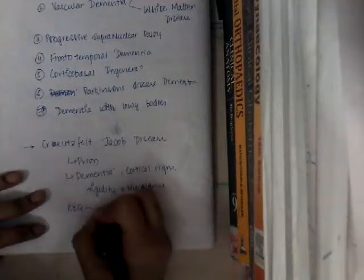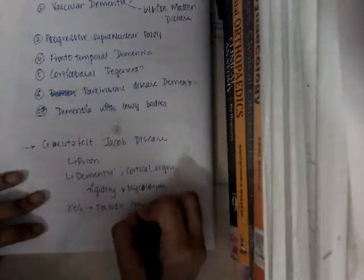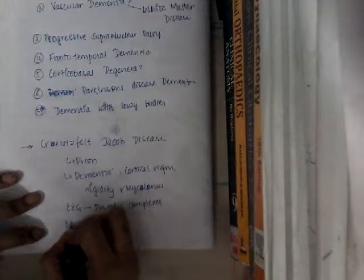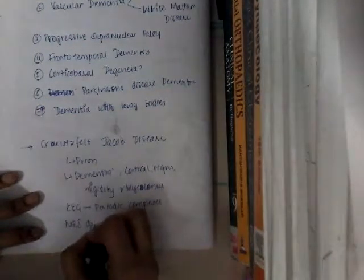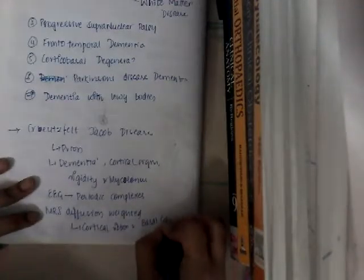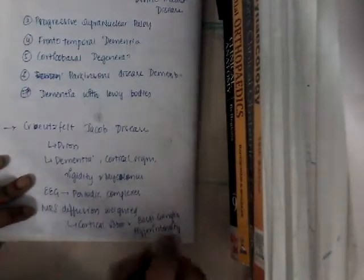In Creutzfeldt-Jakob disease, EEG shows periodic complexes, whereas in Alzheimer's disease, EEG shows non-specific slowing. On diffusion-weighted MRI, you see cortical ribboning and basal ganglia hyperintensities. By these findings, you can differentiate Creutzfeldt-Jakob disease from Alzheimer's disease.